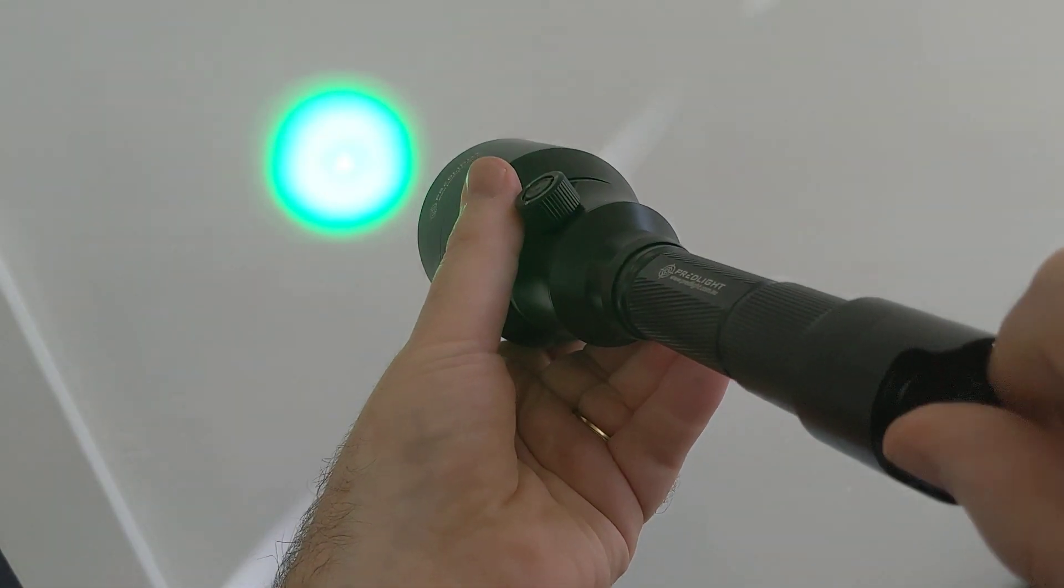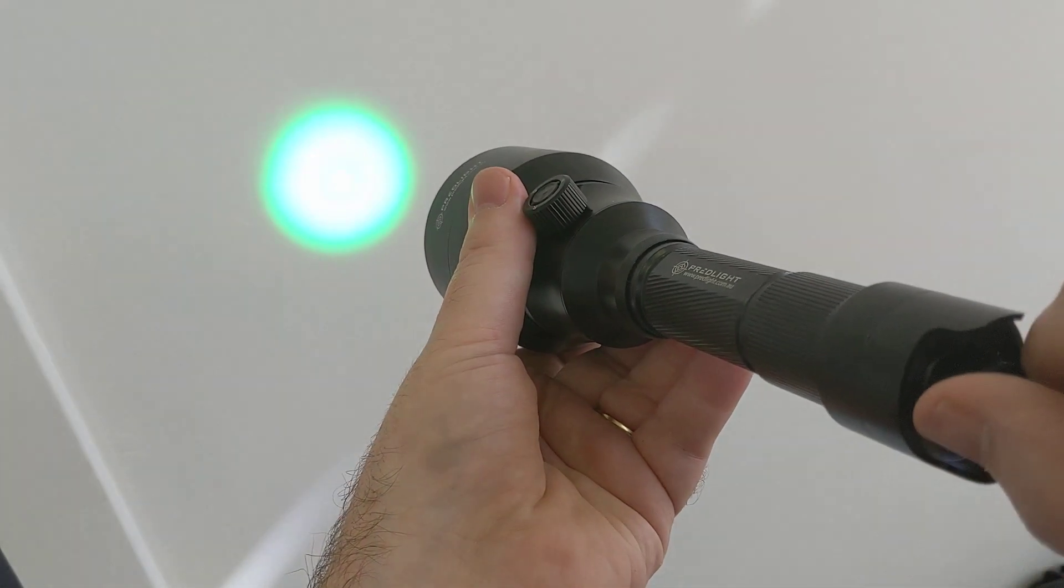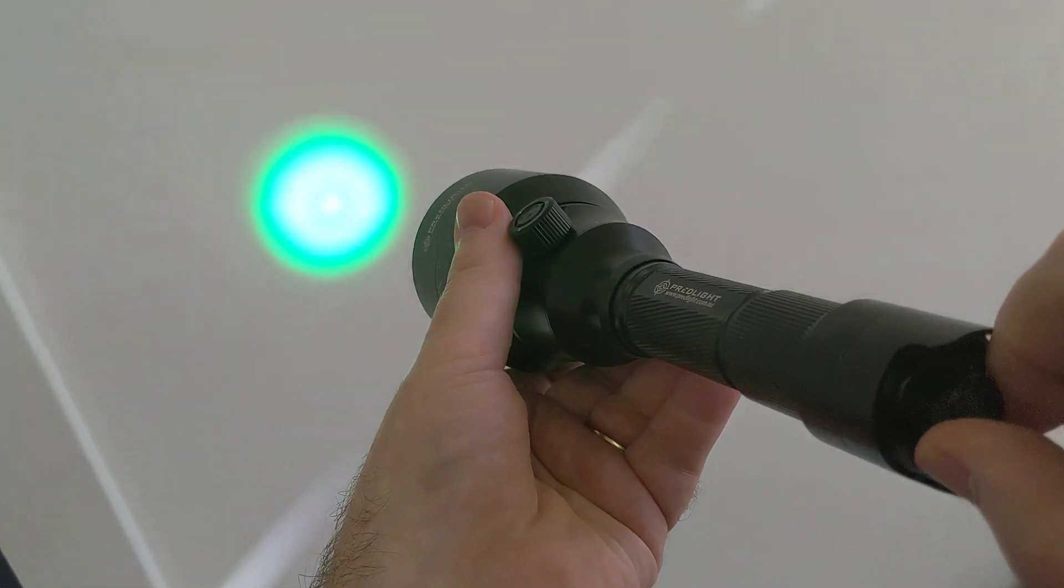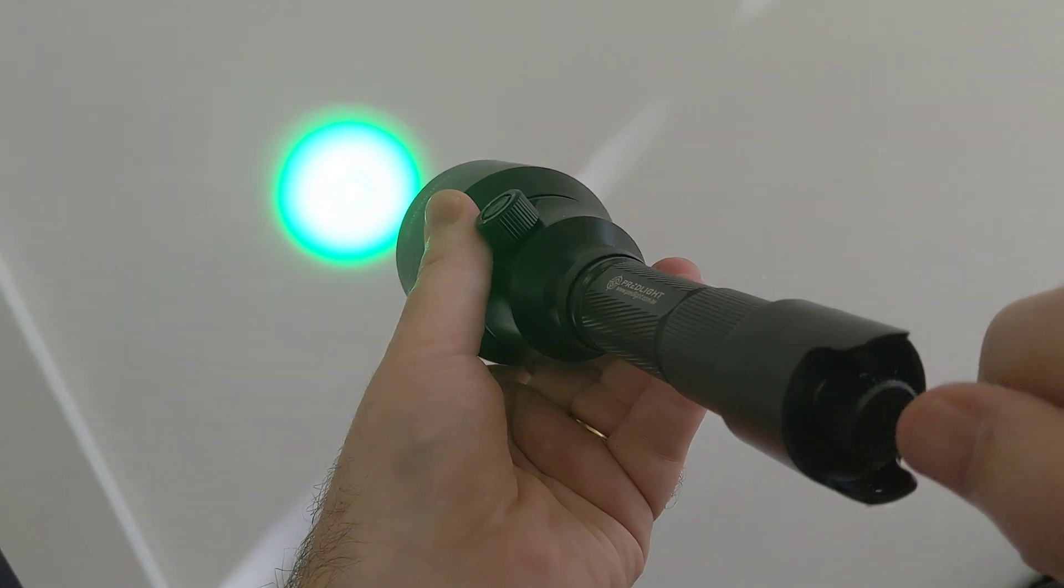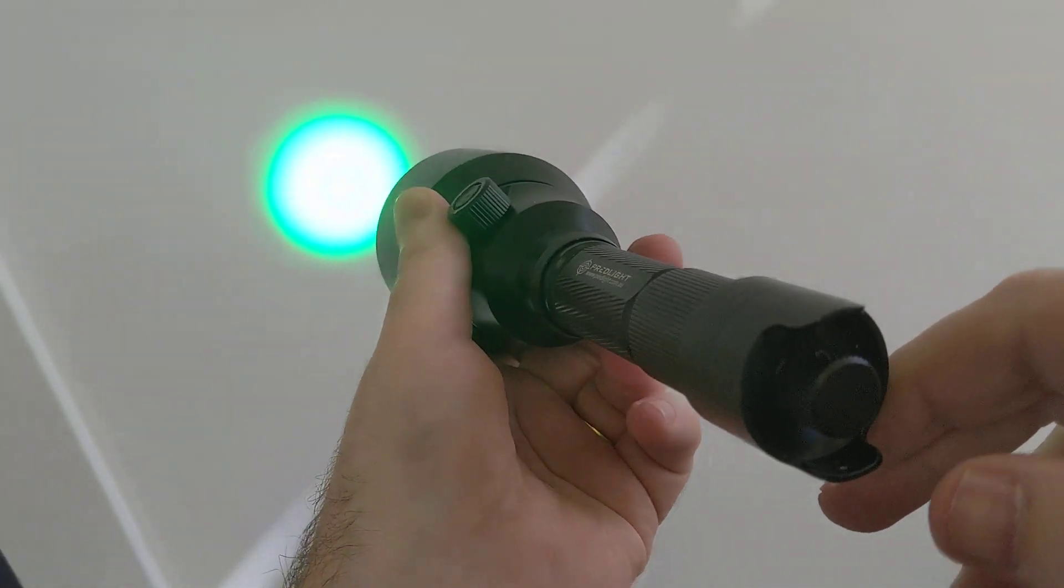The tail switch is also a dimmer knob, so you can adjust to whatever brightness you like. This dimmer knob is also available on the optional remote switch.